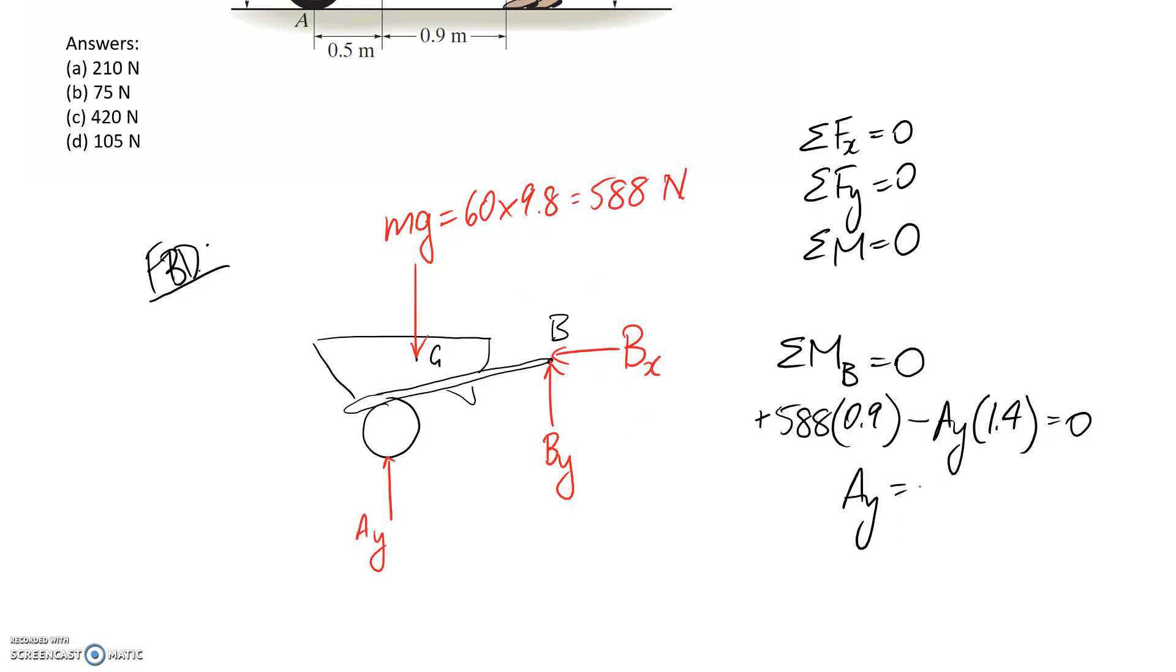So if we solve for this, Ay comes out to be 378 newtons and it comes out positive, that means the direction I had here was correct so it is up.